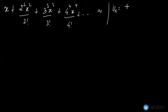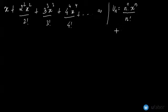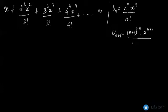u_n would be n^n · x^n divided by n factorial, and the value of u_{n+1} would be (n+1)^{n+1} · x^{n+1} divided by (n+1) factorial.